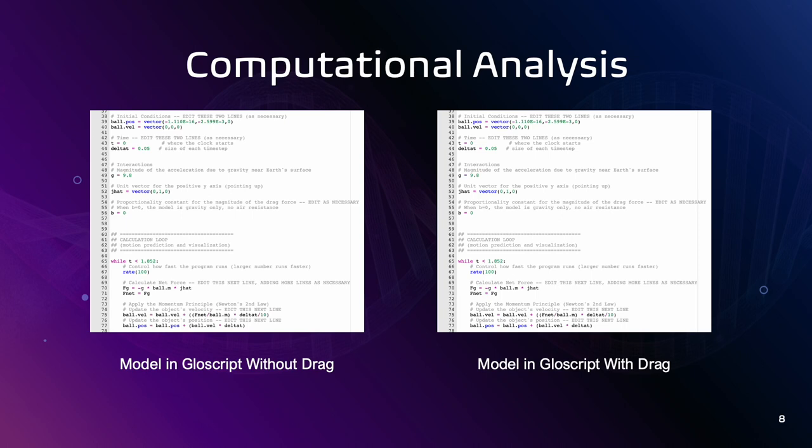We have also defined a j-hat vector, which is the direction vector in the positive y direction. Then, we have defined a while loop and also computed the position and velocity updates for the ball as it falls through the air in the negative y direction.